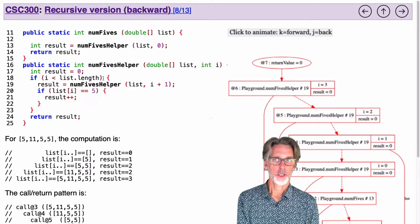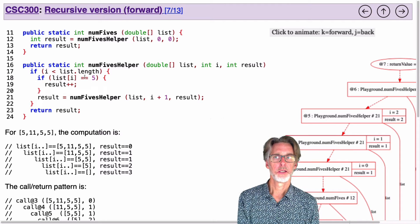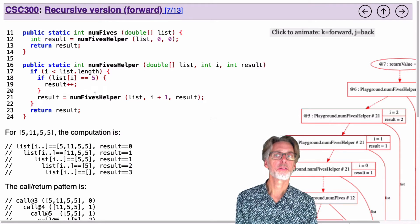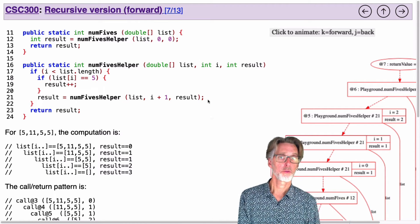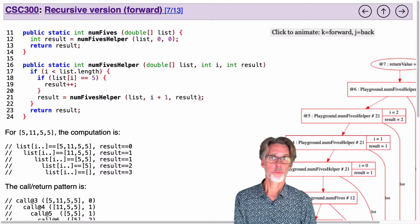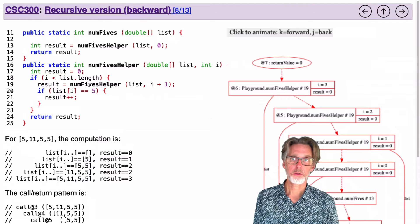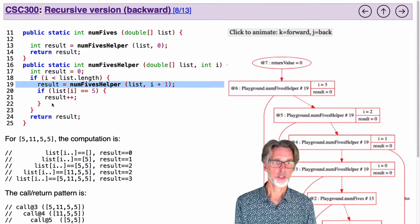So the order here is just different. In the forward recursion, we compute what we need to do here, then pass that newly updated result into the next recursive call. Whereas in a backward recursion, we just do the recursion immediately and then do the computation.